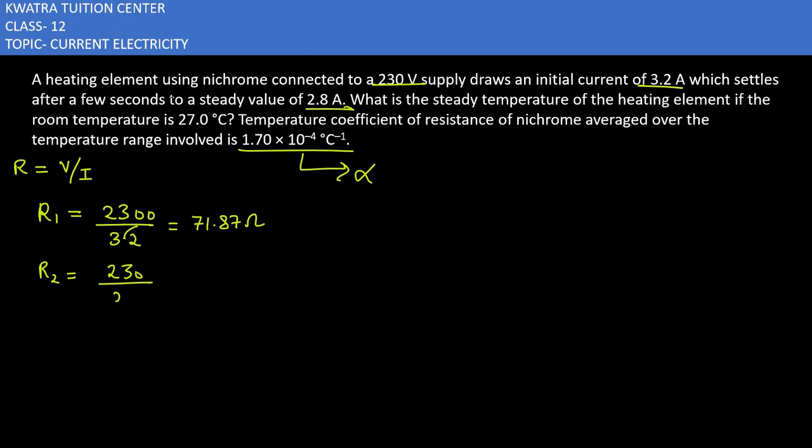For the steady value, 230 over 2.8. 230 divided by 2.8 would be 82.14.